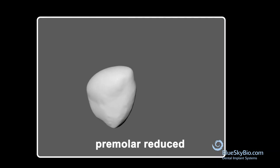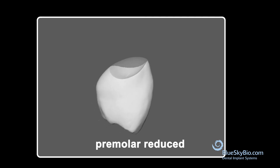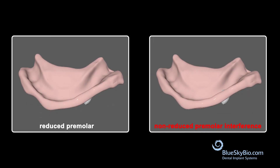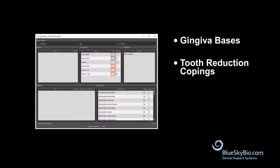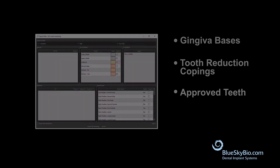The denture module will automatically reduce the teeth in approved teeth libraries to prevent intersection with the dentureless models. All manufactured gingival bases, tooth reduction copings, and approved teeth can be exported from the Blue Sky Plan software to STL files for milling or printing.